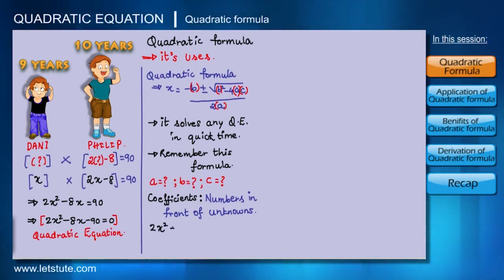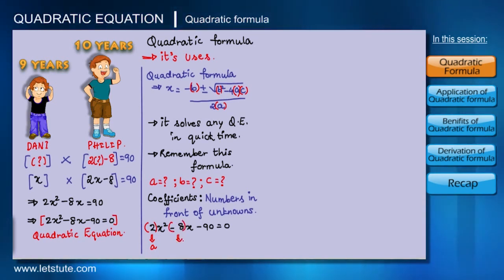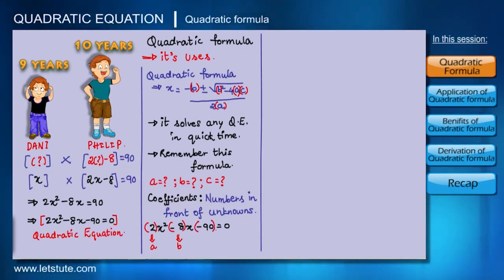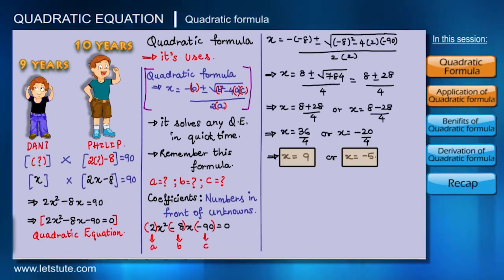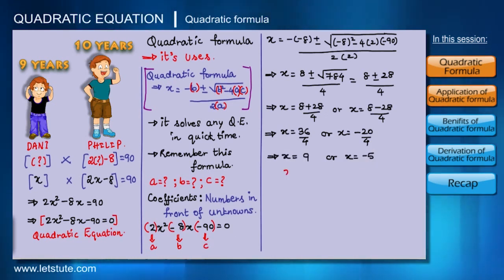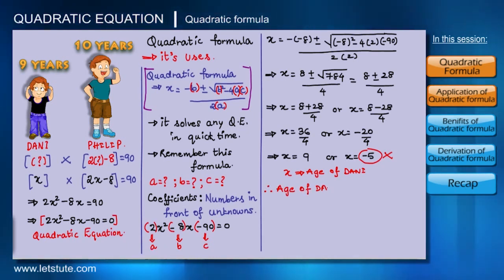In the equation 2X² minus 8X minus 90 equals zero, the coefficient of X² is 2, so we take it as A. The coefficient of X is minus 8, so we take it as B. The constant minus 90 is taken as C. After putting these values of A, B, and C into the quadratic formula, we get two values for X: 9 and minus 5. Since X is Danny's age and cannot be negative, we take X as 9, so Danny's age is 9 years.